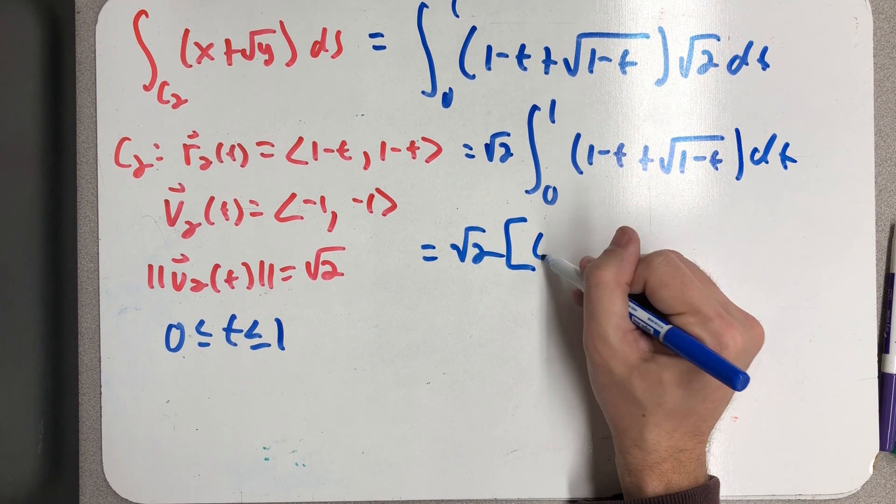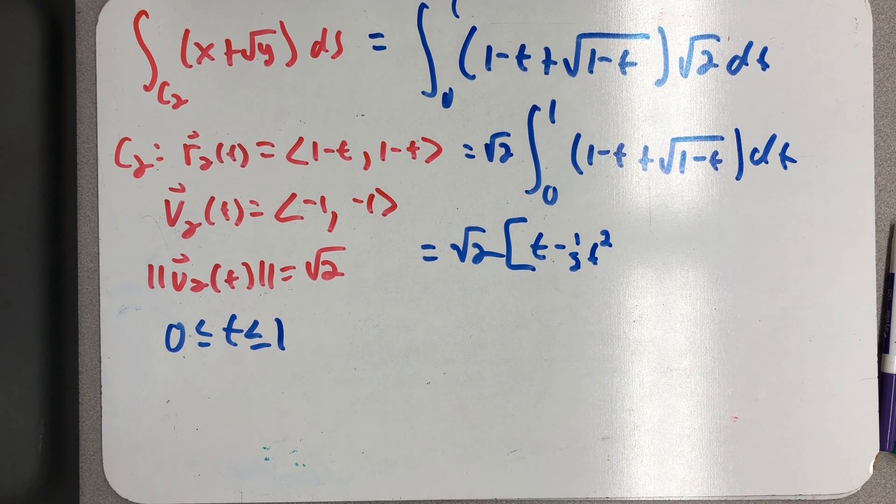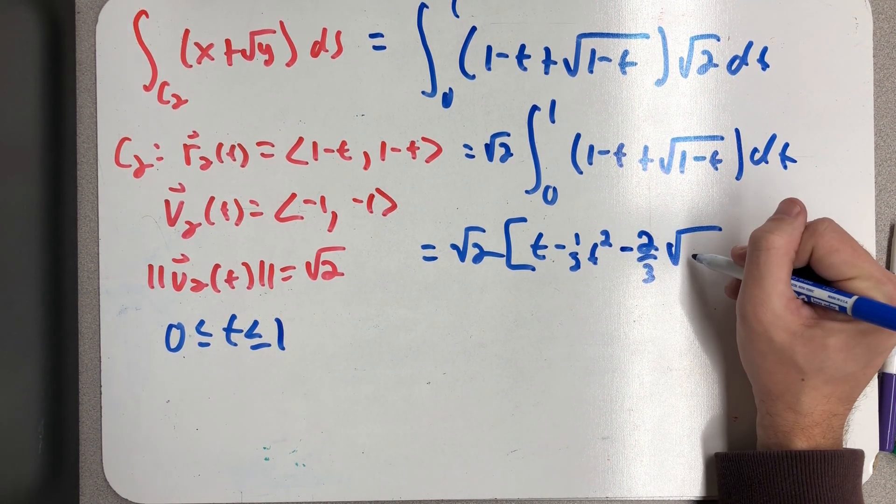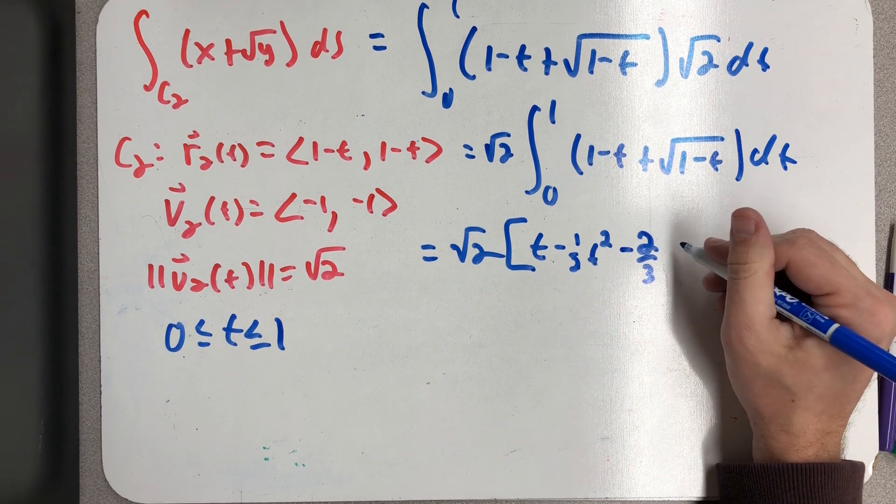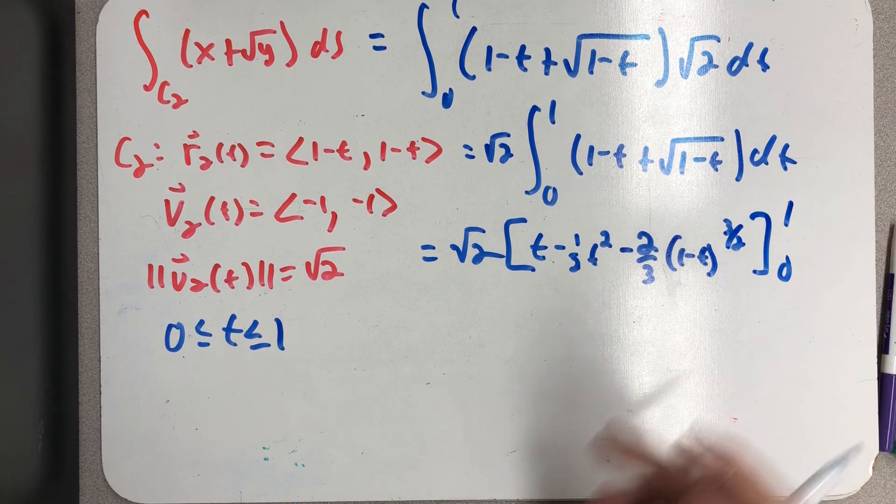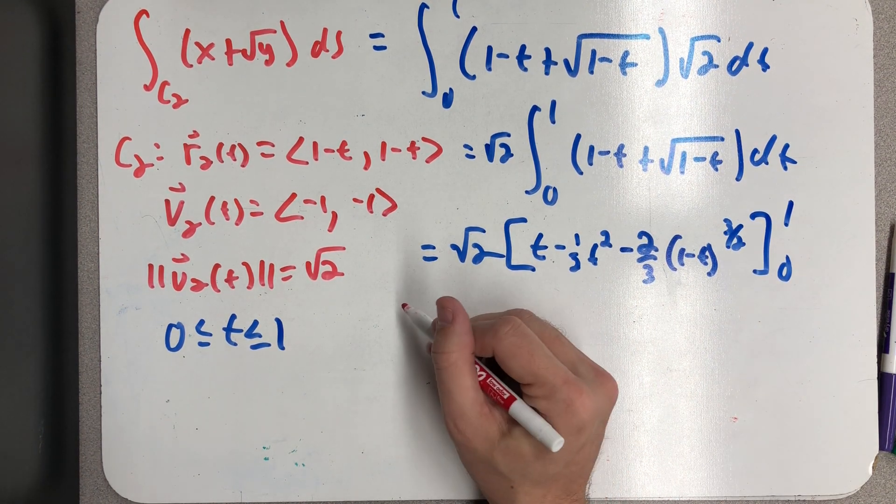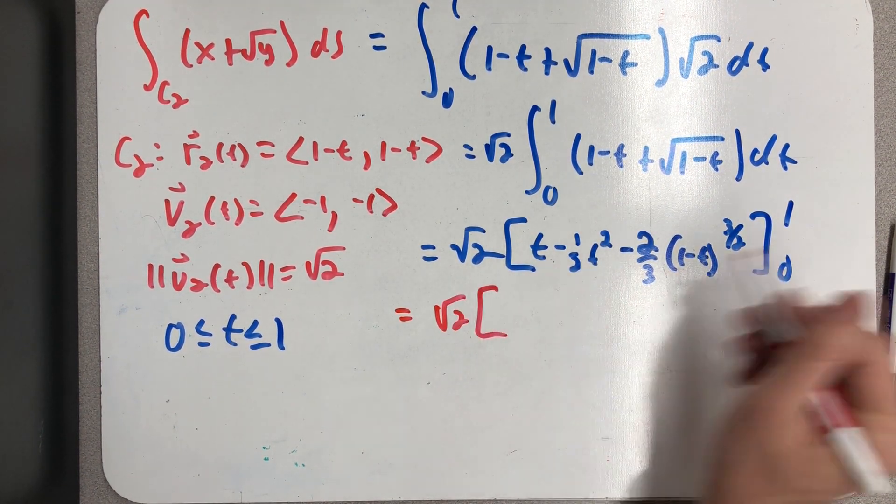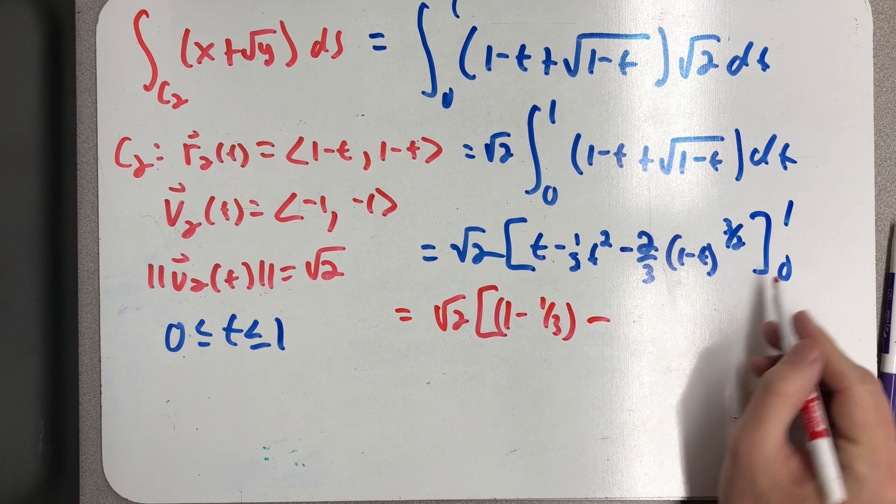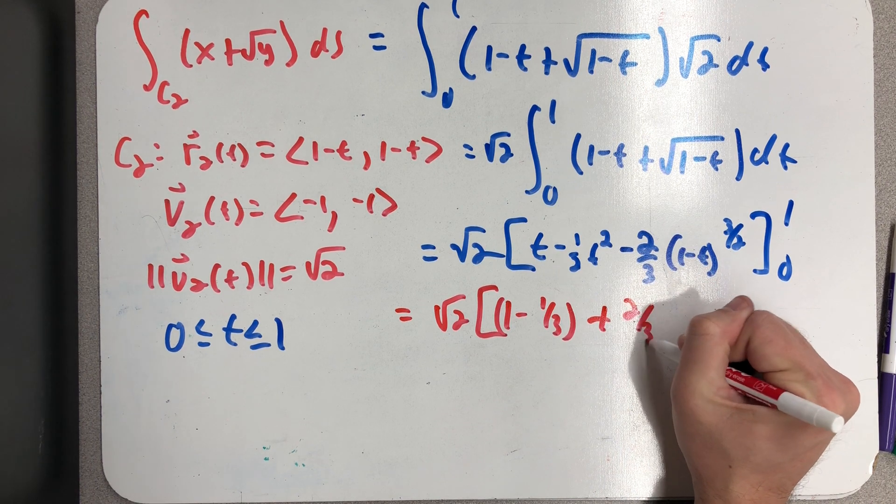(1-t) + √(1-t) dt. So the square root of two times, let's see, t - 1/2 t². And now I need to integrate the square root of 1-t, which you could do a substitution. But what you'll find is that you get -2/3(1-t)^(3/2) evaluated from zero to one. So out front, we have a √2, and now I need to plug in a one and a zero. Plugging in a one, I get a 1 - 1/3 minus, and plugging in a zero, I get minus 2/3. So plus 2/3 here on the end.